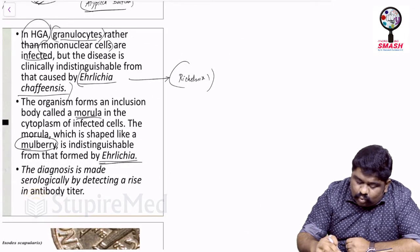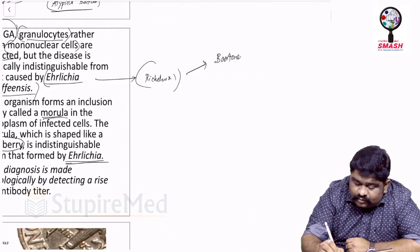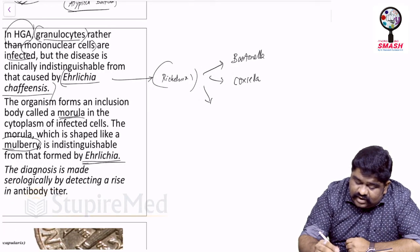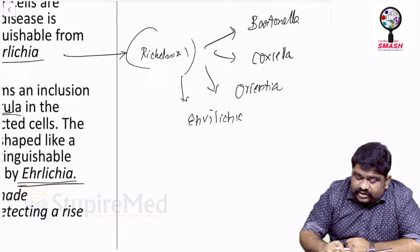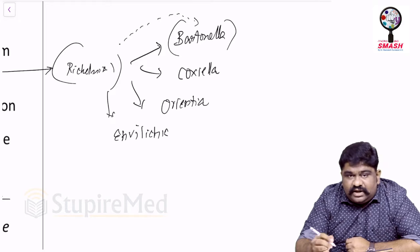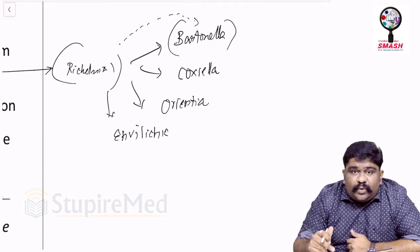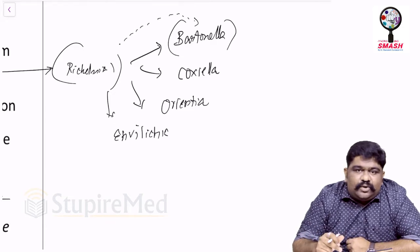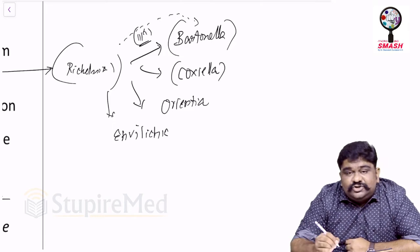Rickettsia has several variants: Bartonella, Coxiella, Orientia, and Ehrlichia. Bartonella has been almost absorbed into the Rickettsia family. For example, Bartonella henselae belongs to Bartonella, but Bartonella quintana comes under Rochalimaea quintana, which is Rickettsia quintana — showing a strong relationship between Rickettsia and Bartonella.